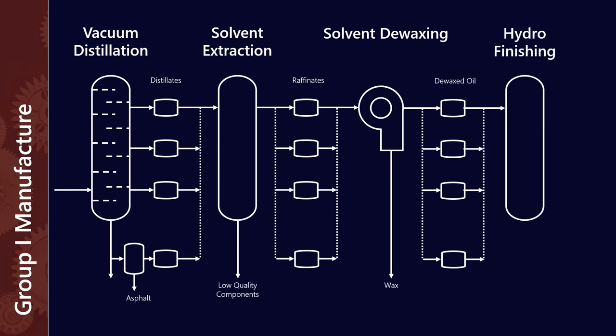So once that's come out, that's wax that comes out the bottom, and then we have a de-waxed oil that goes into a hydro finishing tower and hydro finishing is effectively reacting those products with hydrogen and that removes small amounts of sulfur and some polar components which can improve the color stability of the finished product and contributes a little bit to the demulsibility and oxidative stability performance. And at the end of that what you have is a Group 1 base oil.